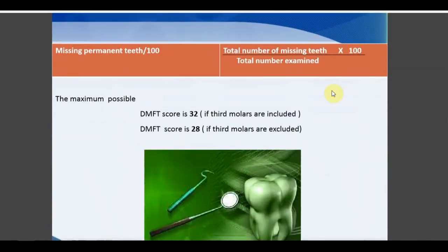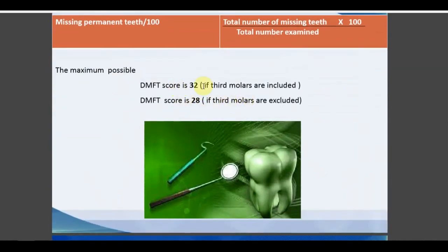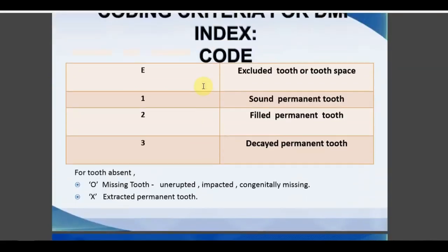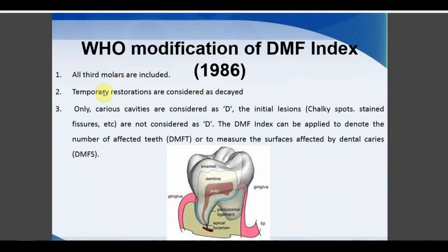In the 1997 WHO modification, the explorer used in the original is replaced by the CPI probe. Additionally, tooth loss due to periodontal disease in individuals over 30 years of age is counted under Missing. This is the fourth edition WHO modification. The 1986 modification was the third edition of the WHO oral health performance survey guide. Advantages: widespread use over ~60 years provides reasonably accurate historical account of caries prevalence changes.